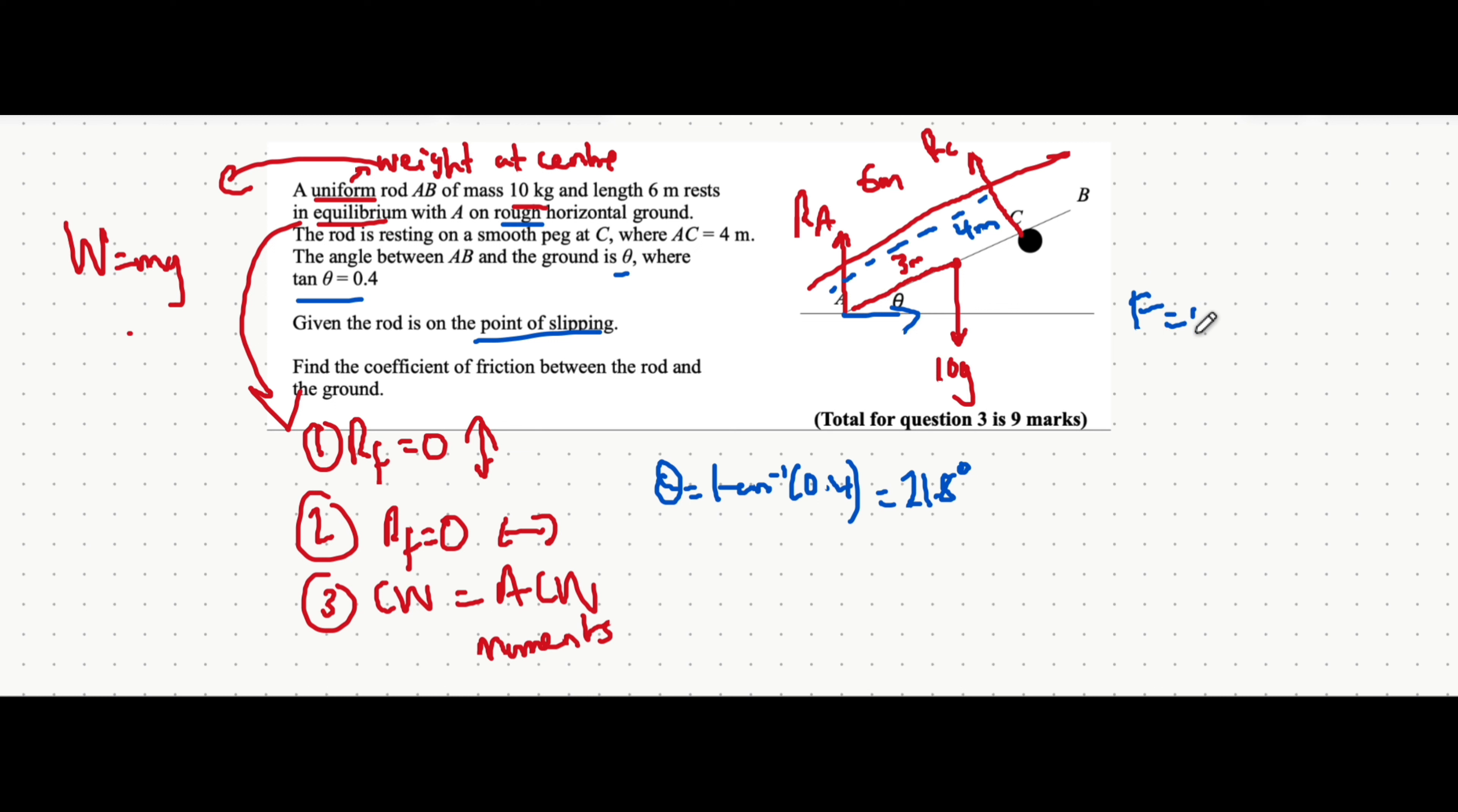What is friction equal to? It's equal to mu R, where R is the reaction force at A and mu is the coefficient of friction. Has it given you the coefficient of friction? That's actually what we need to find. So it's equal to mu multiplied by the reaction force at A.